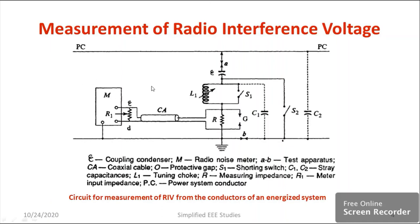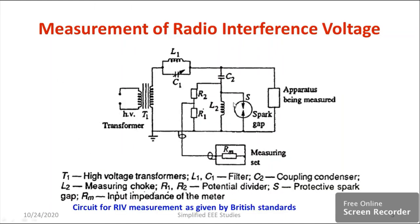This is another type — one more type available — that is based on a British Standard. On the supply side we have a high voltage transformer, and there is an LC filter which acts as a filter. We are keeping a power apparatus — specifically a transformer. Suppose from the transformer bushing there may be a chance that a particular high frequency signal will be responsible for radio frequency EMI. To connect two stages — first stage and second stage — we are having a coupling condenser or coupling capacitor.